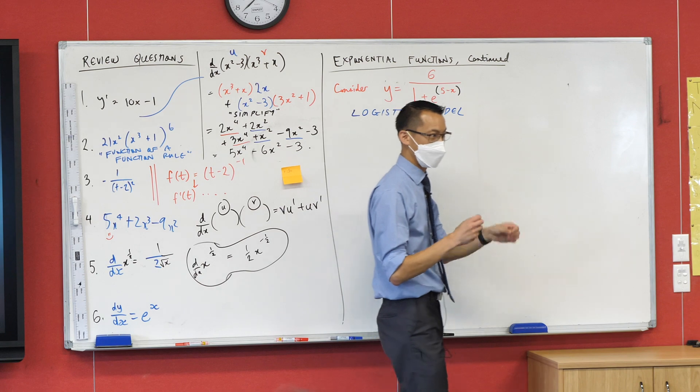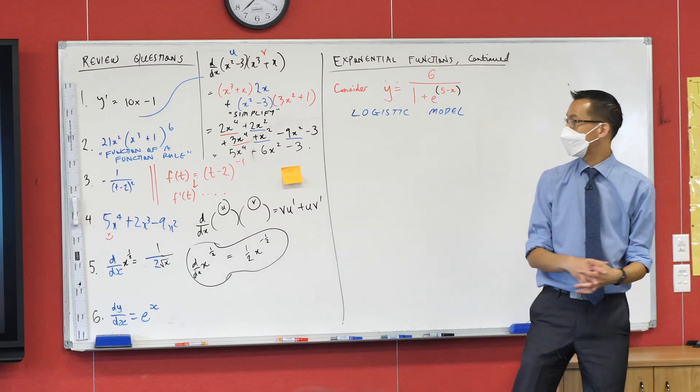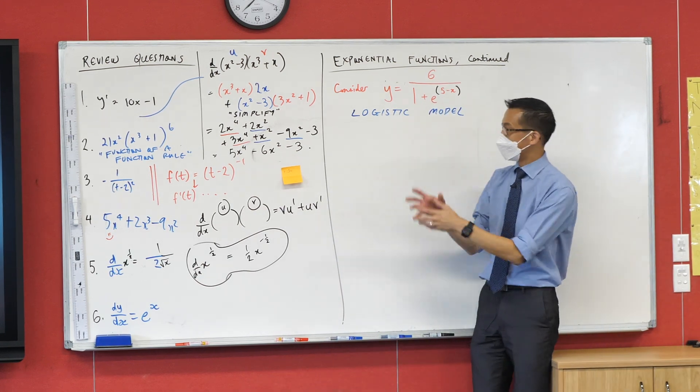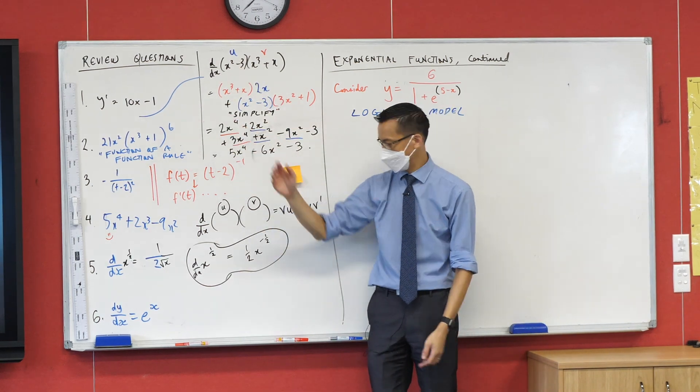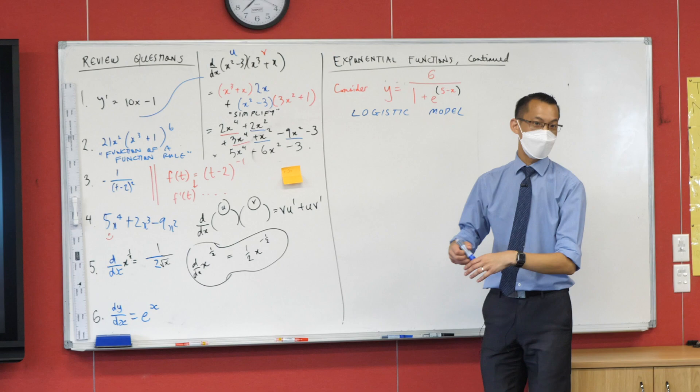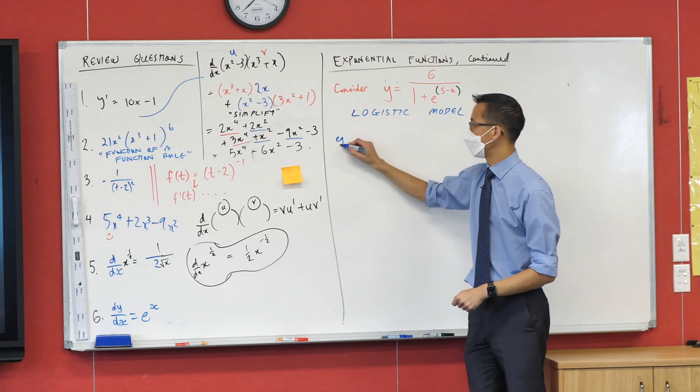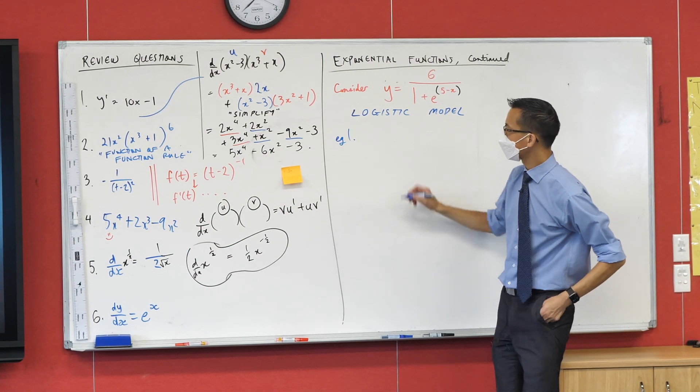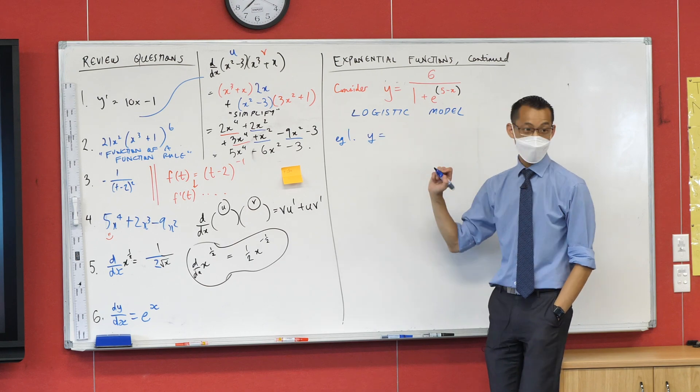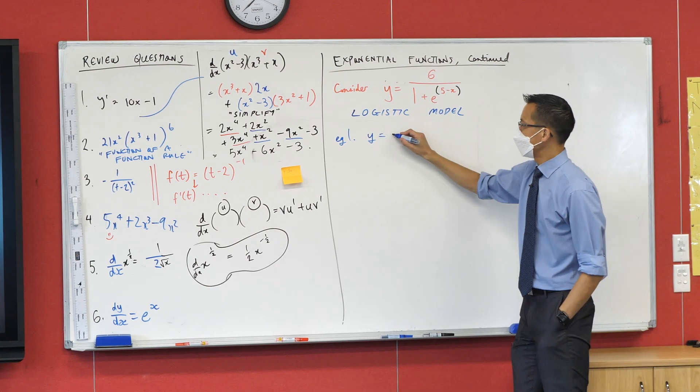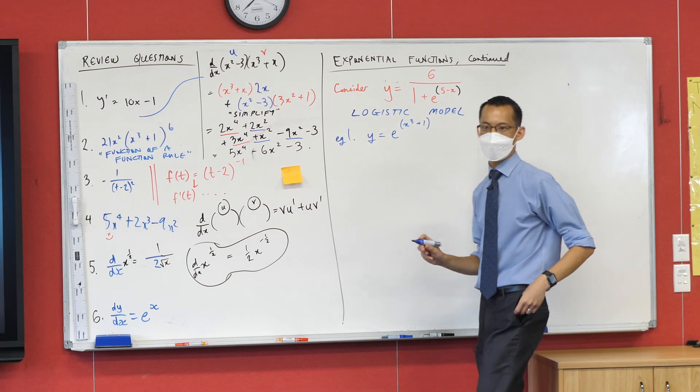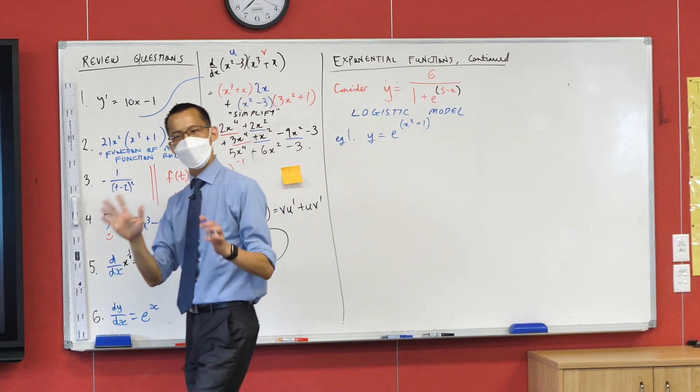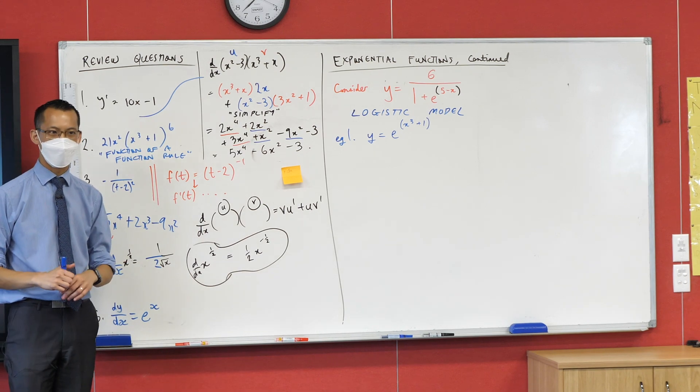Now by the time we're done with this we'll be able to understand how to differentiate this and how to tease it apart. We're actually going to use the same bag of tricks that you learned with all of this stuff. So I'm going to give you a simple example that we can do together. Here comes example one. We're going to differentiate y equals e to the power of x cubed plus one.